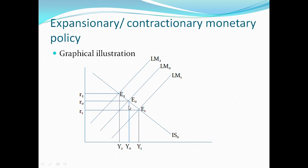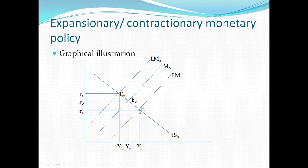For expansionary monetary policy, increasing the money supply affects the money market, so it only affects the LM curve. This causes the LM curve to shift outwards — rightwards — from LM0 to LM1, establishing a new equilibrium point at E1. At this new equilibrium, interest rates are reduced to motivate investors to invest more, and the resultant effect is that national output increases from Y0 to Y1.